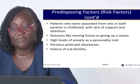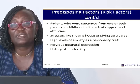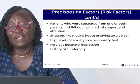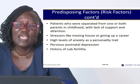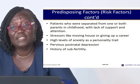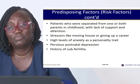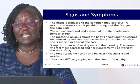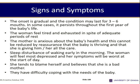Women more prone to developing postnatal psychosis include those separated from one or both parents in childhood, those experiencing major life stressors such as moving house or career change around the time of delivery, high anxiety personality traits, previous postnatal depression — which deepens with subsequent deliveries — and history of subfertility. The onset of postnatal depression is gradual and may last three to six months, or persist throughout the baby's first year.